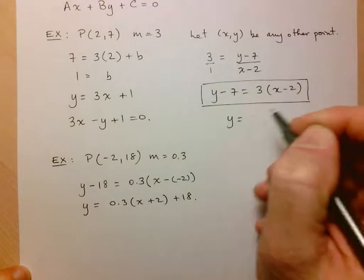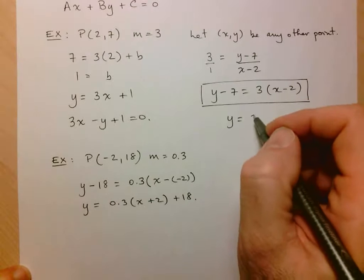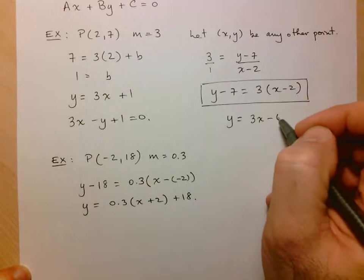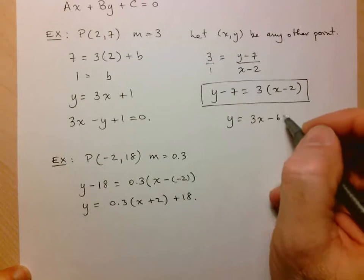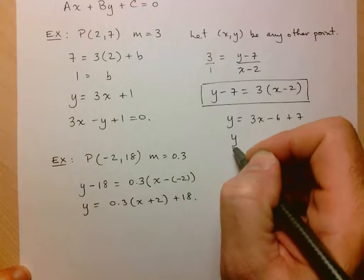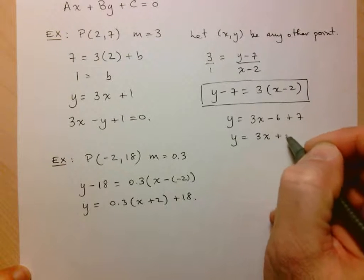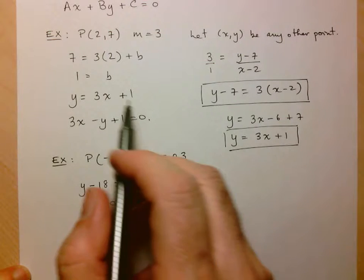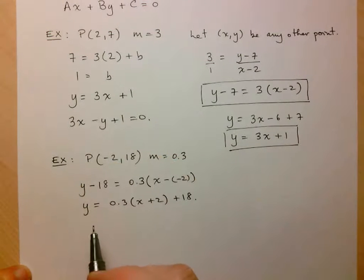So here, if I solve this, so here I've got 3x minus 6, and then this minus 7 to the other side becomes plus 7, and so we have y=3x+1. So, equivalent if I did need to put it in slope-intercept form.